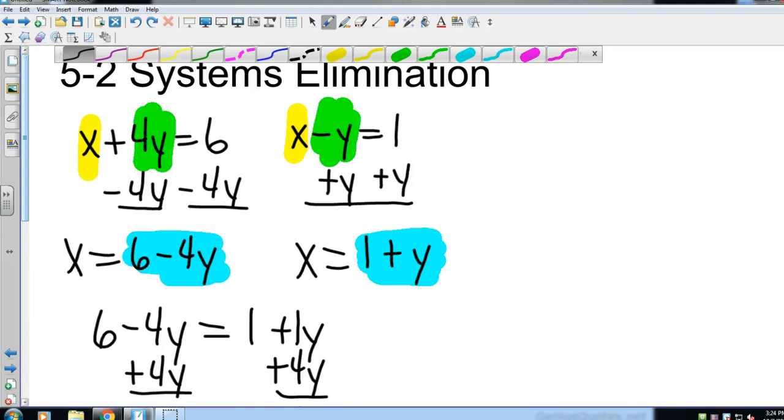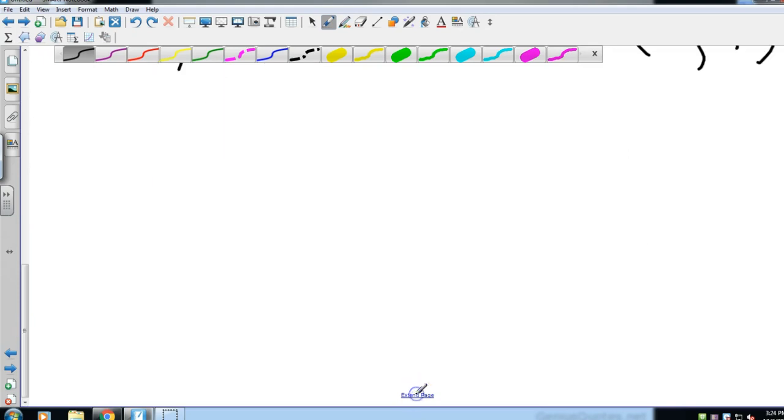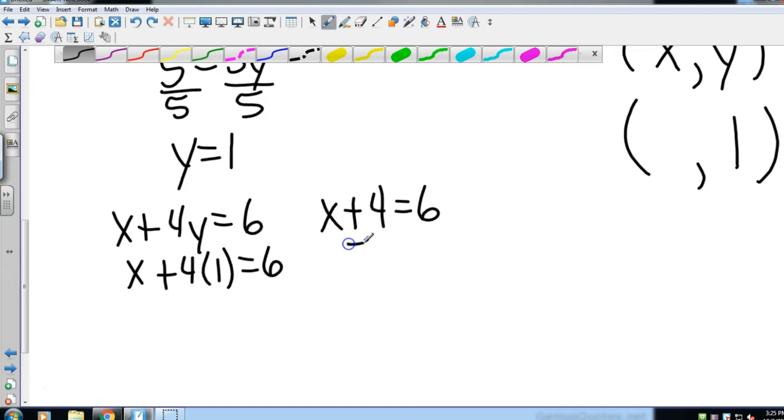And so I'm just going to pick the first one, x plus 4y equals 6. Since I know what my y value is now, I sub it in. So x plus 4 times 1 equals 6. That's x plus 4 equals 6, and then how am I going to solve that one? To get that plus 4 to the other side, I'm going to subtract it.